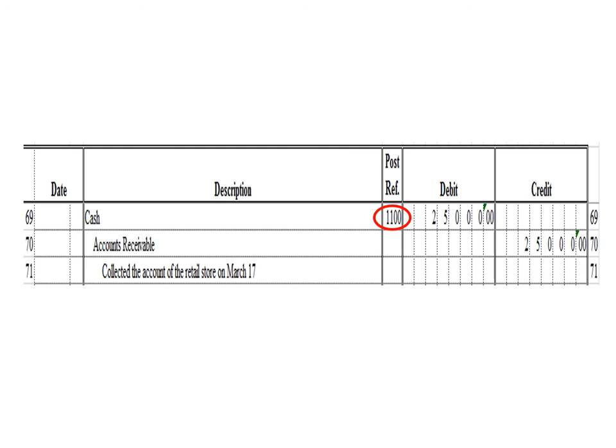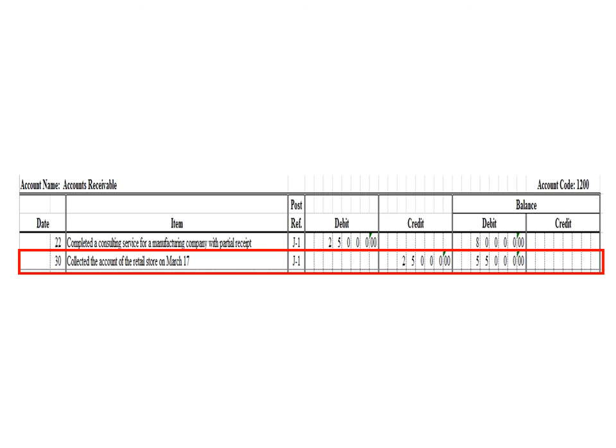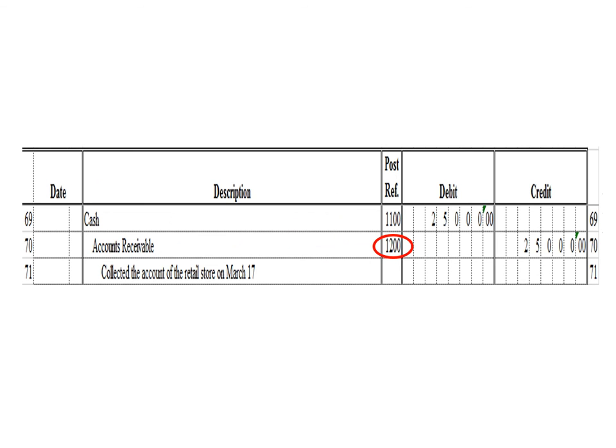Let us post the credit entry. In the accounts receivable ledger, we write date 30, description: collected the account of the retail store on March 17, posting reference J1. Under the credit column, write 25,000 pesos. The balance is 55,000 pesos — previous debit balance 80,000 minus 25,000 credit. As of March 30, the accounts receivable ledger balance is 55,000 pesos debit. After posting, write the posting reference 1200, the account code for accounts receivable.